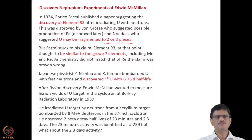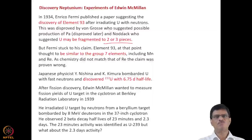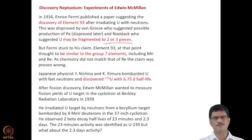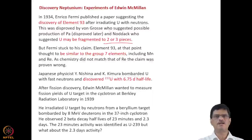Subsequently, Japanese physicists Nishina and Kimura bombarded uranium with fast neutrons around 1940 and discovered uranium-237 with a half-life of 6.75 days. This discovery was correct — but the quantity of uranium-237 isolated was too small, and subsequently it was understood that U-237 decays to neptunium-237, which has a very long half-life. Because of the short 6.75-day half-life of U-237, the resulting Np-237 would have formed in very small quantities — that is why Nishina and Kimura could not detect Np-237; otherwise they would have been the discoverers.